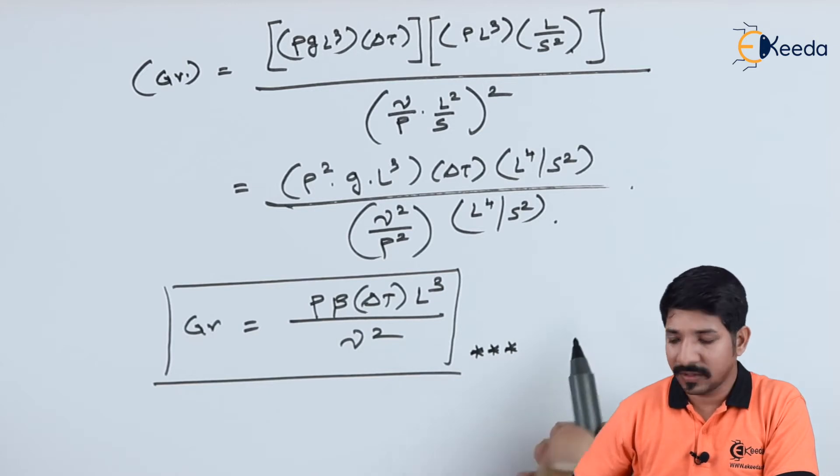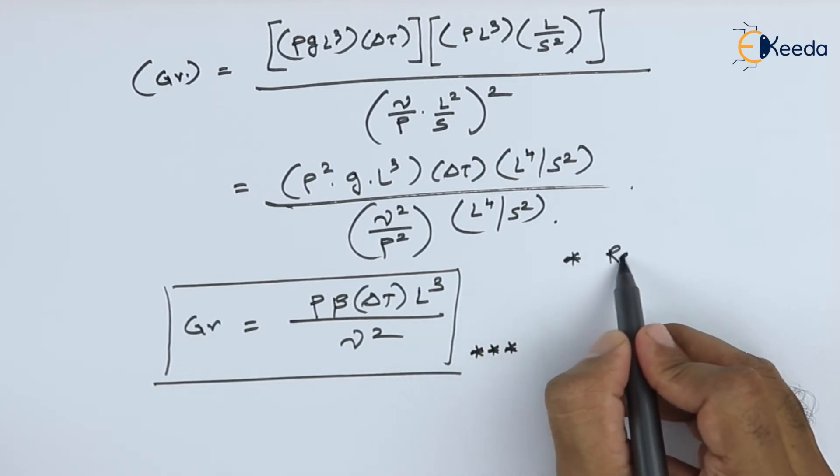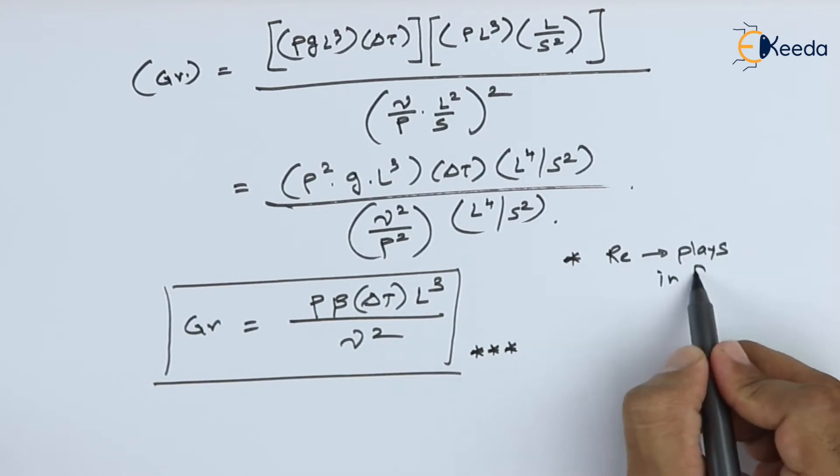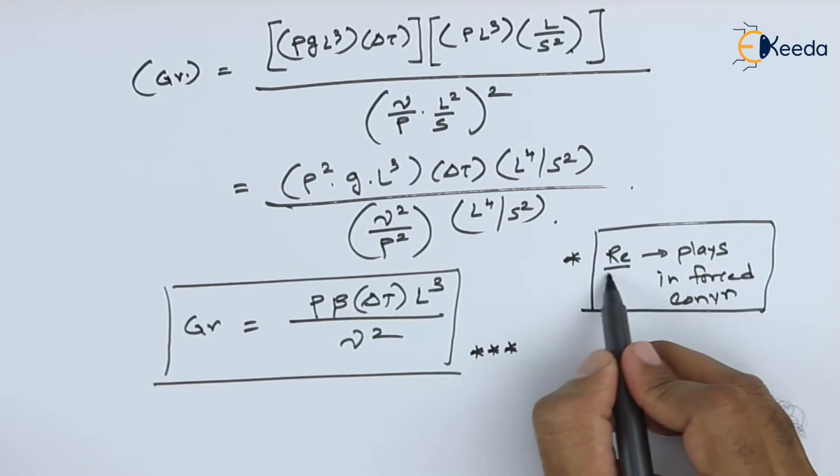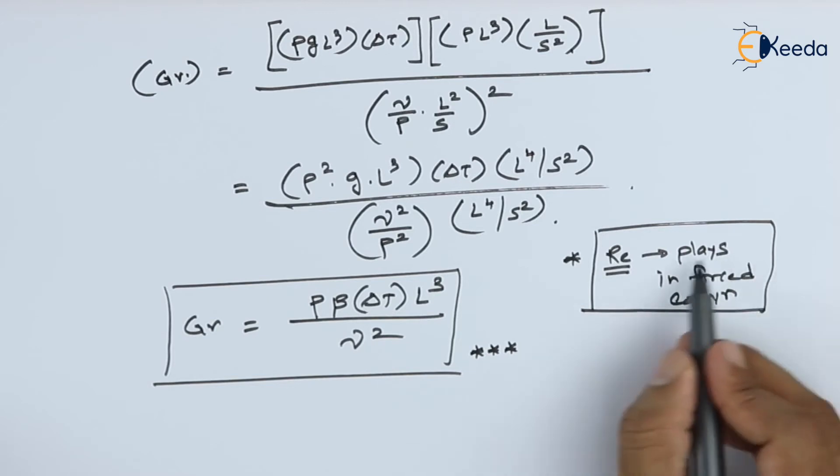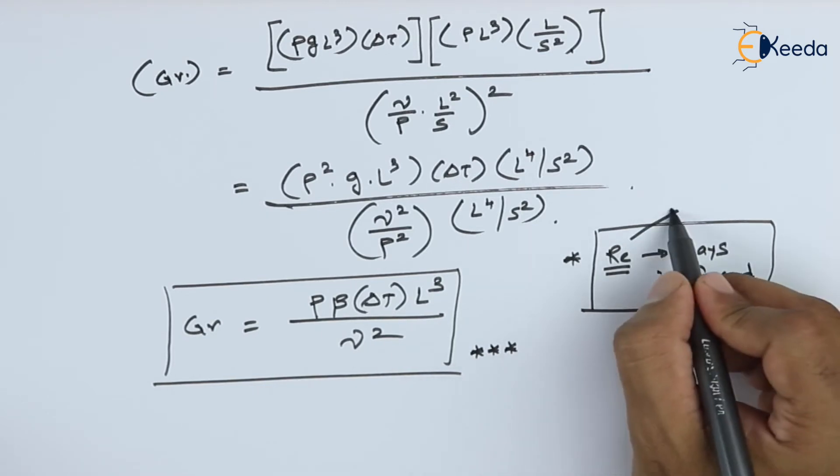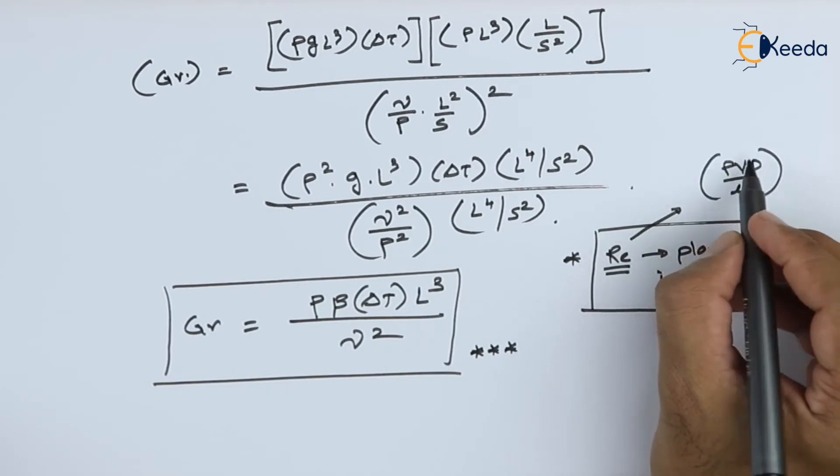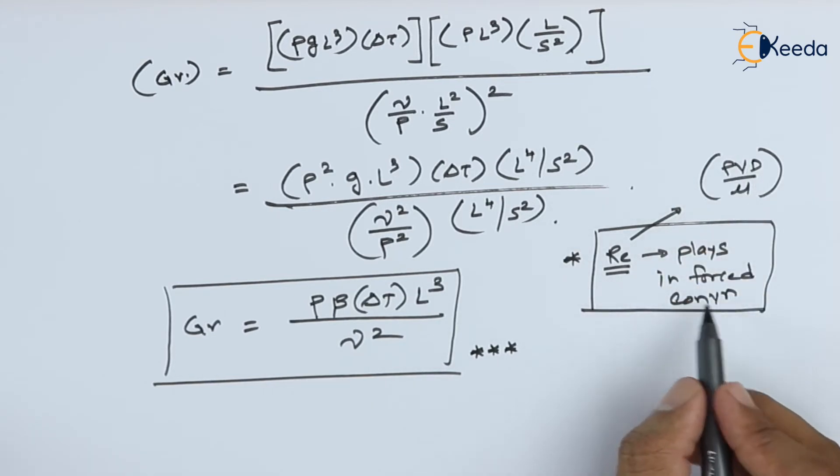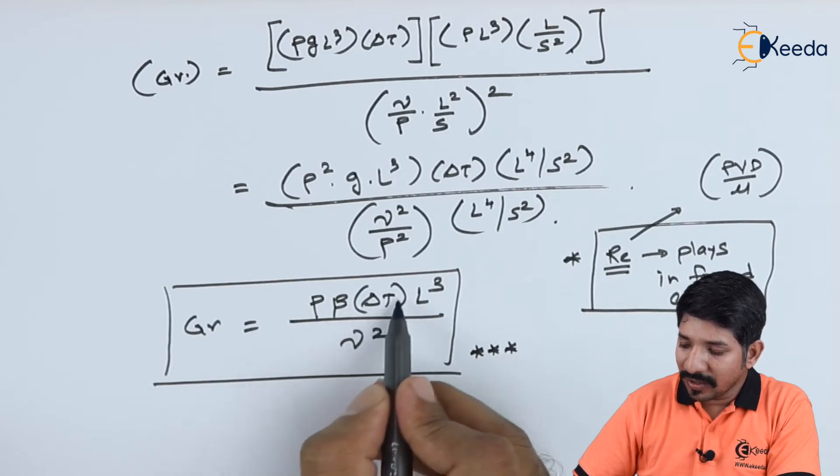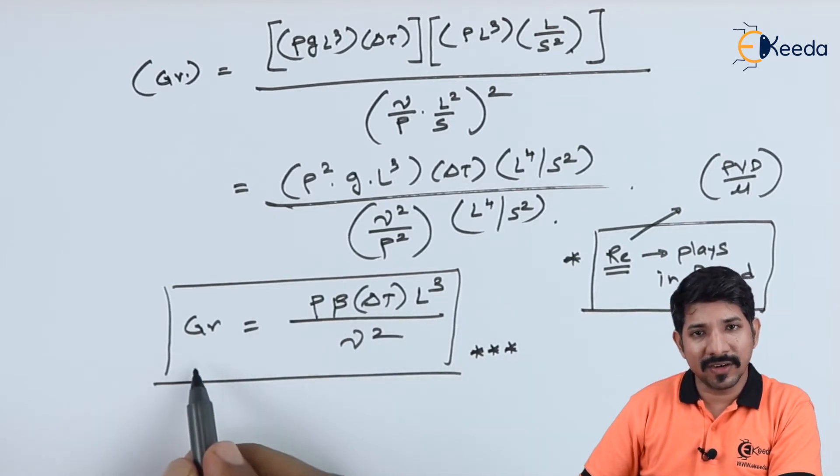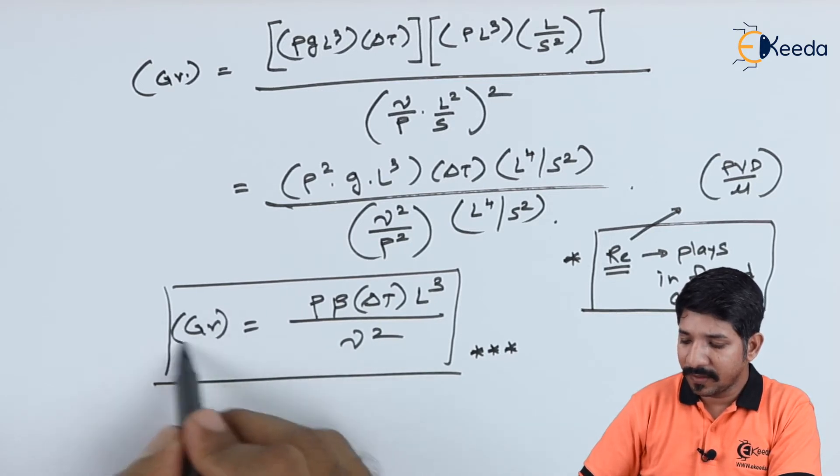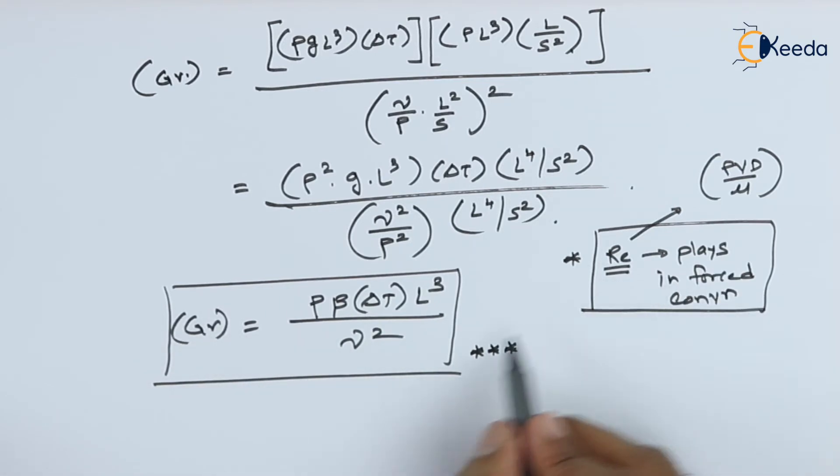Now, what is the significance of the Grashof number? This plays a similar role that a Reynolds number plays in forced convection. So, basically, Reynolds number decides the type of flow in case of forced convection. We know that Reynolds number itself is given as rho vd upon nu. Now, there the velocity term is coming to picture. Velocity was responsible for the flow in case of forced convection. And, delta t is what responsible for the flow in case of natural convection. That is why the delta t is coming to the Grashof number. So, both of them play the equivalent role in forced and free convection respectively.